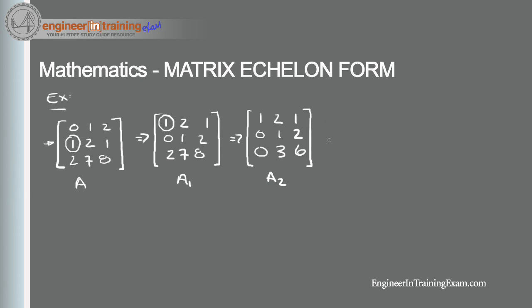The next step is to continue working this matrix. Working with A2, we multiply each element of row 2 by negative 3 and add that result to row 3 to eliminate the 3 in the last row. Calculating: negative 3 times 0 plus 0 is 0; negative 3 times 1 is negative 3 plus 3 is 0; negative 3 times 2 is negative 6 plus 6 is 0. The remainder rows remain the same.